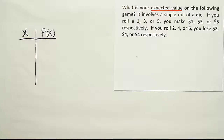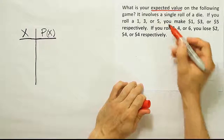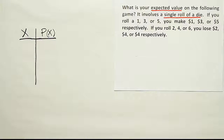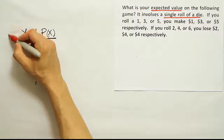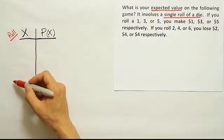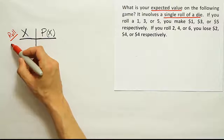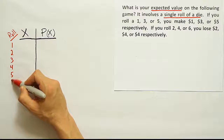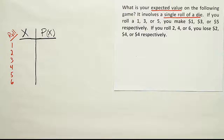Now, we want to think about the controlling event — what event determines the dollar amounts paid out. Since it involves a single roll of a die, the event is the outcome or number on the die. The possible numbers when you roll are 1, 2, 3, 4, 5, or 6 — those are the only possible outcomes. We'll note the roll off to the side of the table just to guide our thinking.